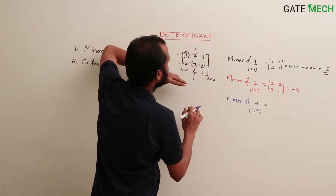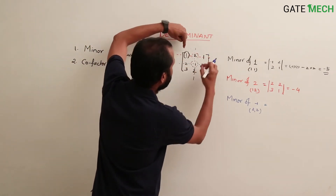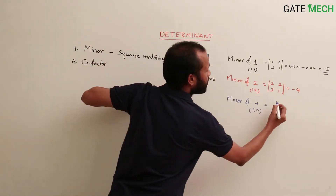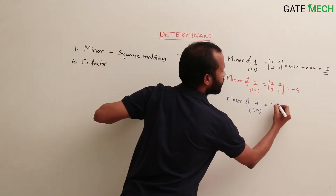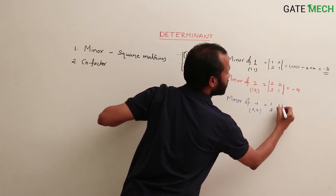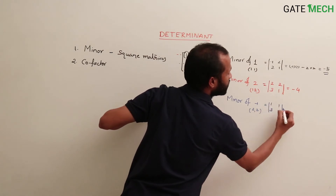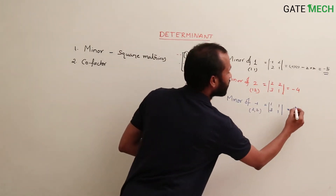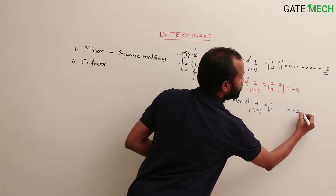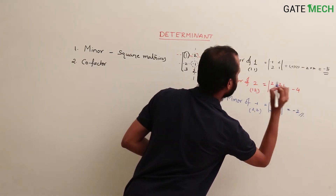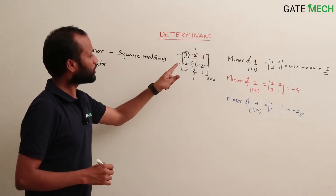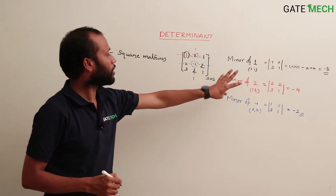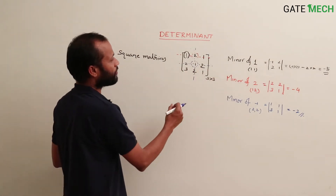If you hide the second row and second column, the remaining elements are 1, 1 / 3, 1. The determinant of this sub-matrix is (1)(1) - (1)(3) = 1 - 3 = -2. This is how minor is found.